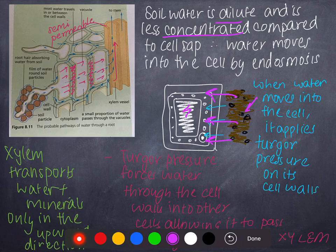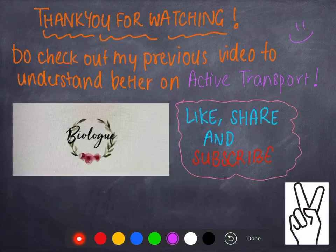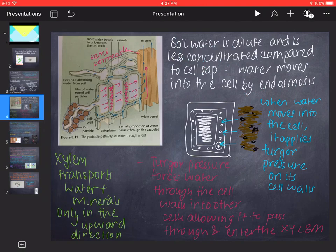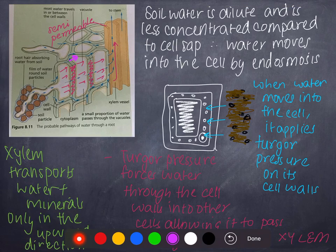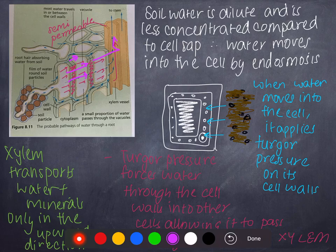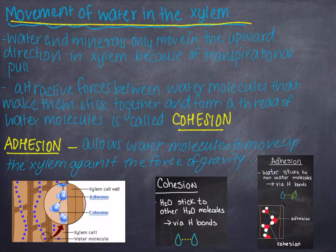When water moves into the cell from the soil, the cell swells up, due to which the water exerts pressure on the sides of the cell. The water exerts pressure on the cell wall that allows it to push against the cell walls and move into other cells. Turgor pressure forces water through the cell walls into other cells, allowing it to pass from other cells into the xylem. The xylem transports water and mineral salts only in the upward direction, and this is because of the transpirational pull.